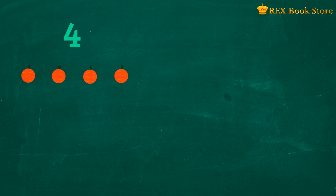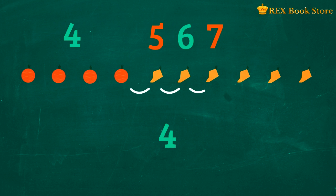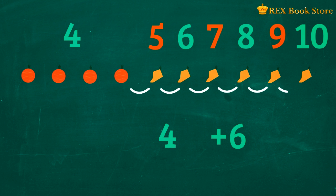This time, Megan has four oranges. She also has six mangoes. How many fruits does Megan have in all? Four plus six equals ten. Megan has ten fruits in all.